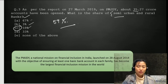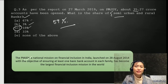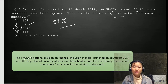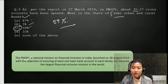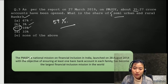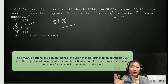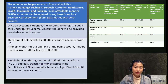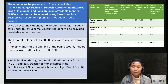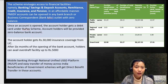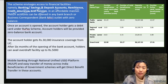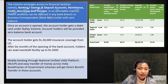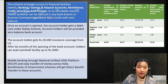Pradhan Mantri Jan Dhan Yojana is the national mission on financial inclusion in India. It's one of the biggest and largest financial inclusion missions in the world, and it was launched on 28 August 2014. The main objective was to ensure that at least one basic bank account is present in each family in the whole country. It provides access to financial facilities namely banking, savings and deposit accounts, remittance, credit, insurance, pensions in an affordable manner, as well as financial literacy and financial counselling.